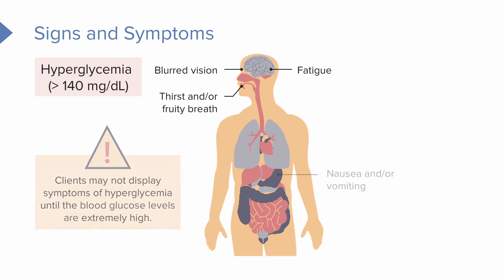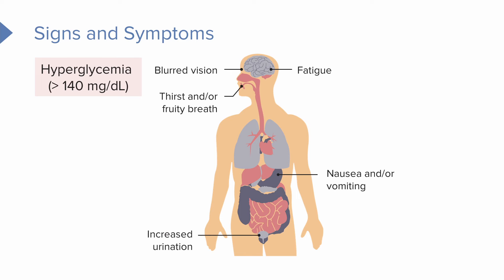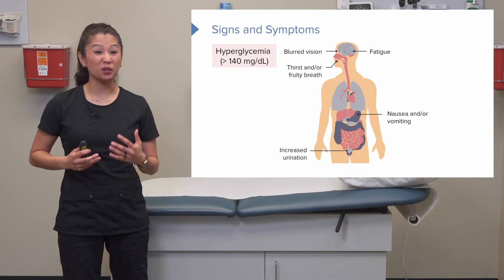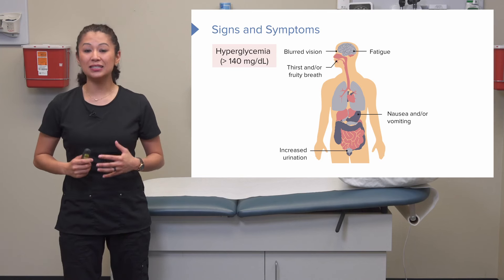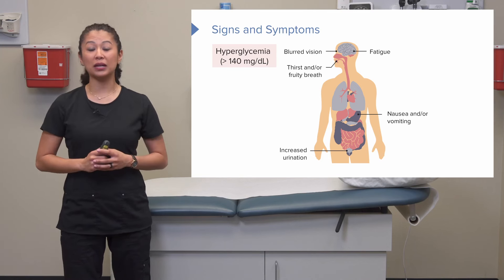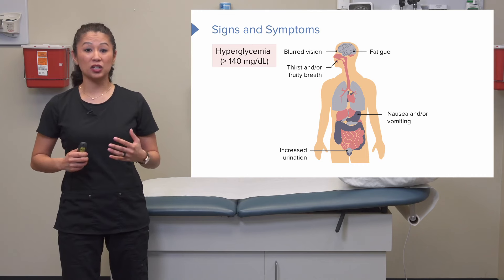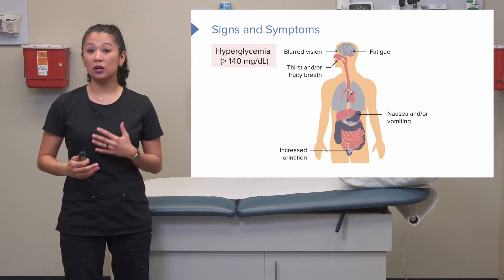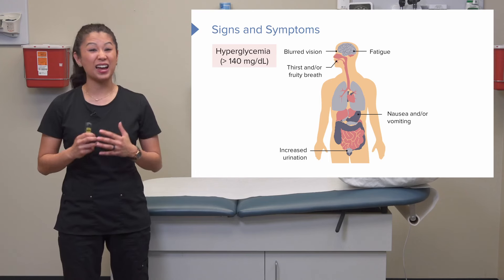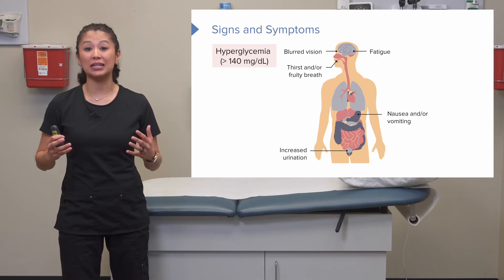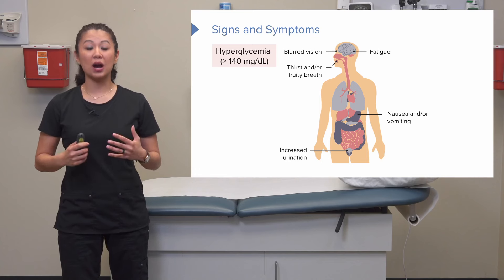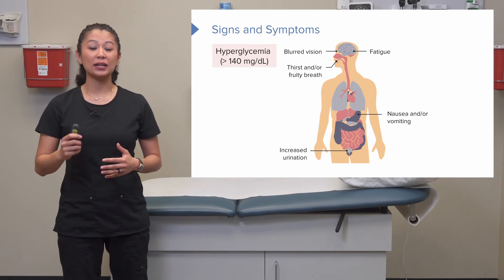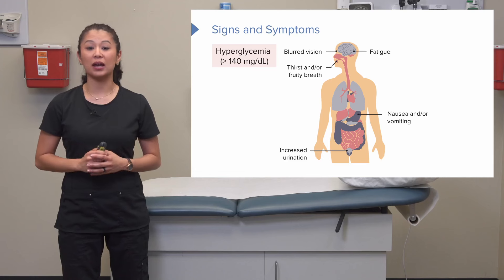The patient could also have nausea, vomiting, and increased urination. With typical hyperglycemia, if this is a chronic issue for our diabetic patients, the patient could be running in the 200s, for example, for a long time and not have many of these symptoms or even any at all. This is why important glucose monitoring and patient education for those with diabetes is so valuable.